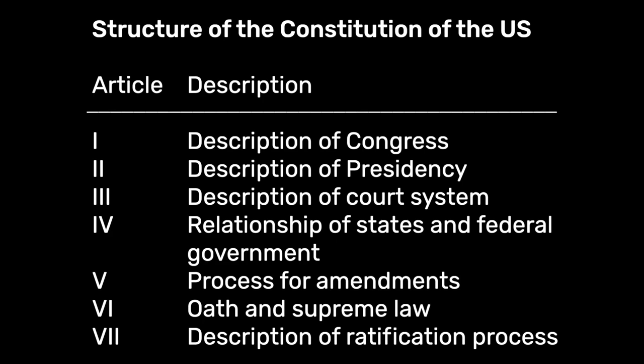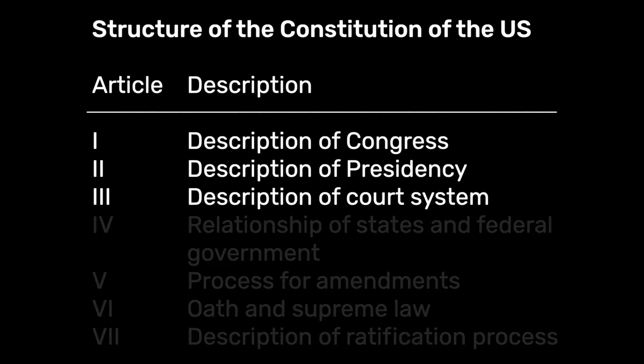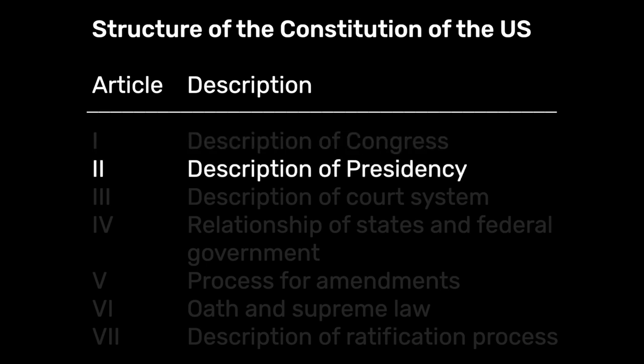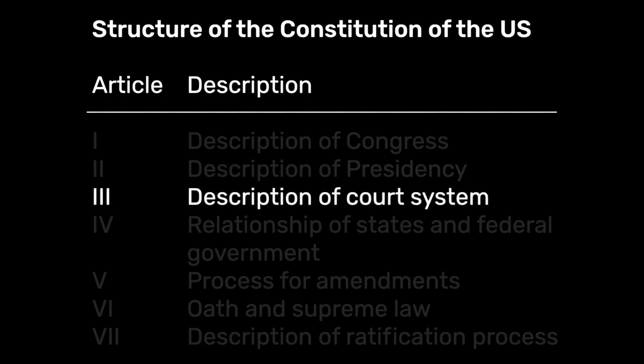As we walk through the structure of the Constitution, it's important to realize that the preamble is not just a bunch of glittering generalities. There are seven articles in the Constitution, and the only three that are really well organized are the first three. Article I covers the people's branch — Congress, both the House and the Senate — their powers and the limits on their powers. Article II is about the executive, the president. Article III is about the courts, especially the Supreme Court.